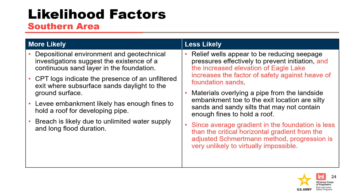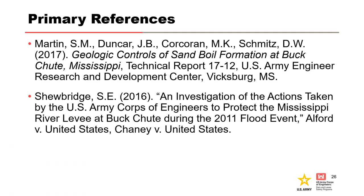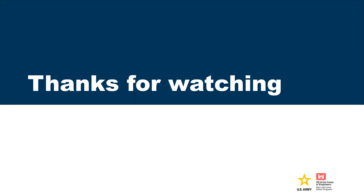In the southern area, the flood-fighting efforts bolster two of the existing less-likely factors related to BEP. The increased elevation of Eagle Lake increased the factor of safety against heave at the seepage exit location and reduced the average gradient in the foundation further below the critical horizontal gradient for progression of BEP. While perhaps less effective than in the northern area, the intervention efforts undertaken had an effect on the likelihood of BEP in the southern area. Based on the comparison of these factors with and without the flood-fighting and intervention efforts undertaken during the 2011 Mississippi River flood, it's likely that near failure or failure of the levee embankment was prevented. This concludes the case history presentation on the intervention efforts undertaken at Buck Chute Levee to prevent backward erosion piping during the 2011 Mississippi River flood.